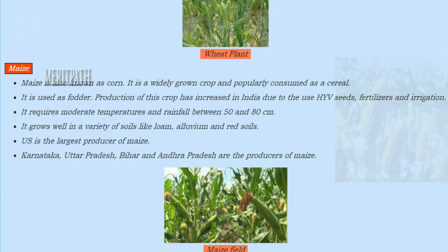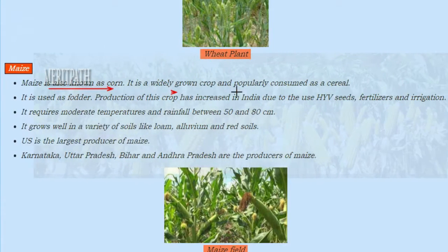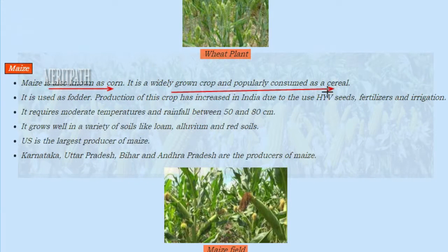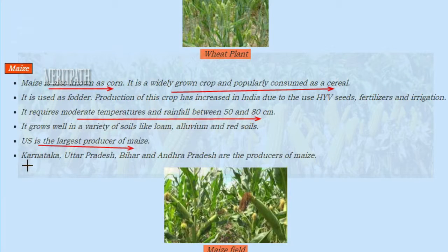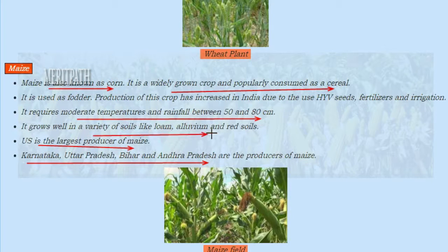The next type of food crop is maize. Maize is also known as corn. It is a widely grown crop and popularly consumed as a cereal. It requires moderate temperature and rainfall between 50 to 80 cm. The US is the largest producer of maize. In India, Karnataka, Uttar Pradesh, Bihar, and Assam are producers of maize. Maize grows well in soils like alluvial and red soils.